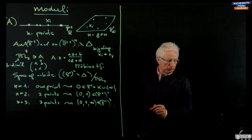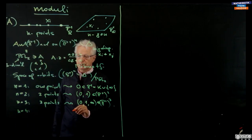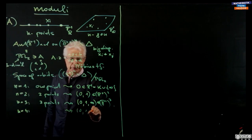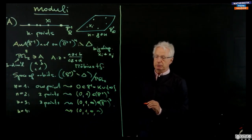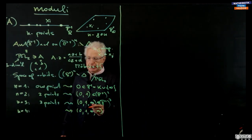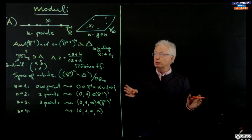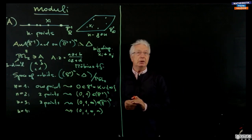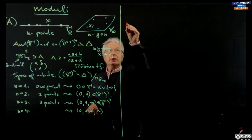Things become interesting when we go to n equals 4. For n equals 4, the first three points will go to 0, 1, infinity. But the fourth point will be some point A, and we cannot move it wherever we want. So I am very limited with my light board and have to spare space whenever I can.